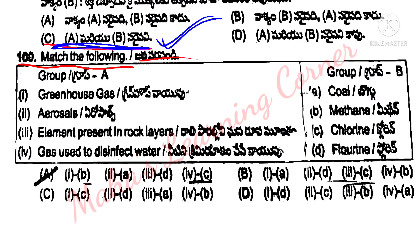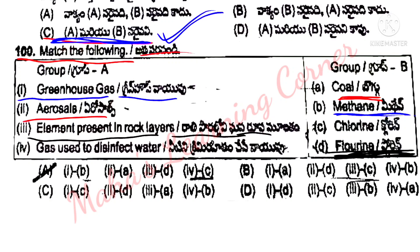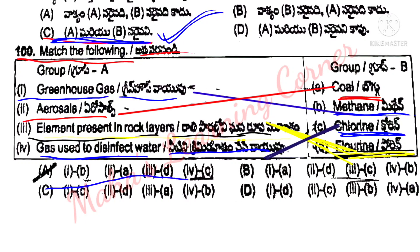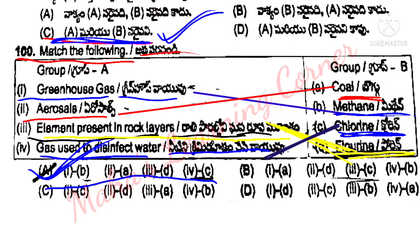Next, match the following. Greenhouse gas — methane. Aerosols — example: coal bog. Element present in rock layers — fluorine. Gas used to disinfect water — chlorine. The matching is 1B, 2A, 3D, 4C. Option A is the correct answer.